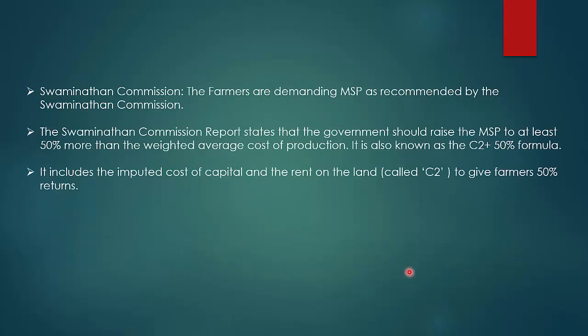What did the Swaminathan Commission recommend? The farmers demanded MSP as recommended by the Swaminathan Commission. The report states that the government should raise the MSP to at least 50% more than the weighted average cost of production — also known as the C2 plus 50% formula — which includes the imputed cost of capital and the rent on the land (C2) to give farmers 50% returns. The government did not accept all recommendations, and farmers were protesting to apply them.